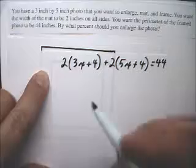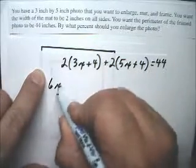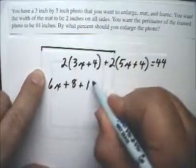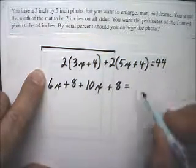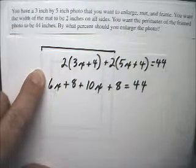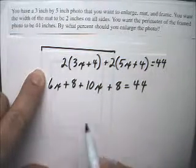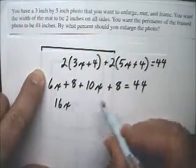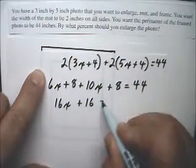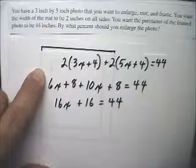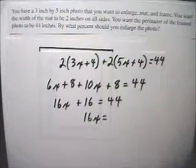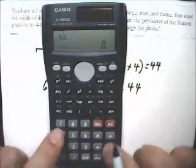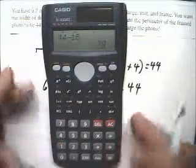Working on this, we get 6x plus 8 plus 10x plus 8 equals 44. Now, getting like terms together, 6x plus 10x is 16x. 8 and 8 is 16. So we end up with 16x equals whatever 44 minus 16 is. And that's 1.75.